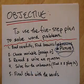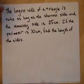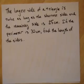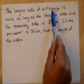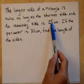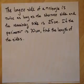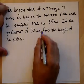I'm going to do two, three problems with you. So here we go to the five-step plan. The longest side of a triangle is twice as long as the shortest side, and the remaining side is 25 centimeters. If the perimeter is 70 centimeters, find the length of the sides. All right. There's a lot going on here, but I know that there's a triangle, so I'm going to draw one.